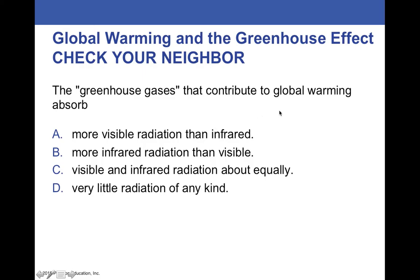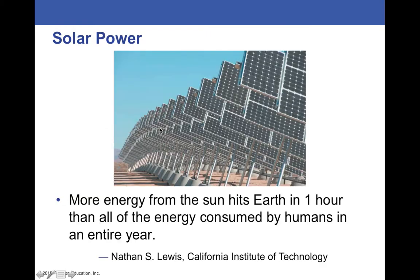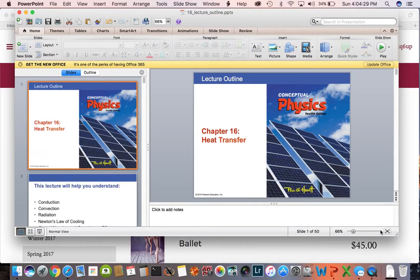The greenhouse gases that contribute to global warming. Go ahead and pick the best answer. They absorb more infrared than visible light. So, that's why the light is able to pass through to the surface of the Earth, the visible light. Then it gets absorbed. But then the infrared light gets scattered back to Earth instead of going back out into space. And solar power, more energy from the sun hits the Earth in one hour than all of the energy that's consumed by humans in the entire year. So, just a little factoid. Anyways, hopefully you found this informative. And there will be a quiz posted, and I'll send you the information on Canvas.